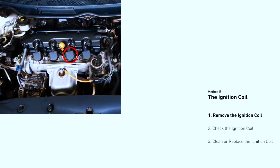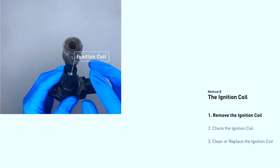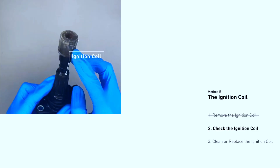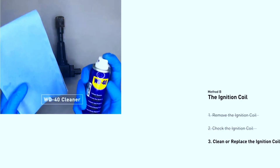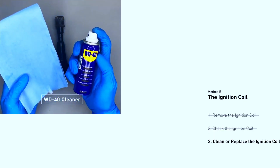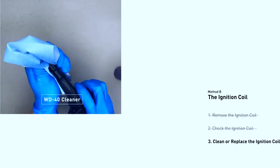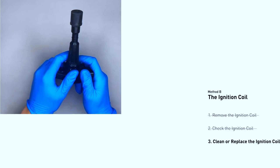Some coils are easy to swap between cylinders. If possible, switch the coil from cylinder 5 to another one — if the misfire code jumps to the new cylinder, the coil is likely bad. Warning: some coils require specialized tools to remove, so if you're unsure, consult a mechanic. Clean or replace the faulty coil if needed.